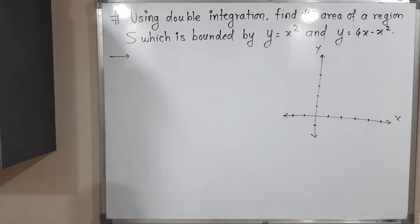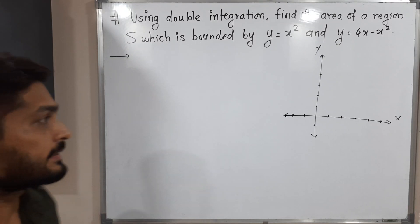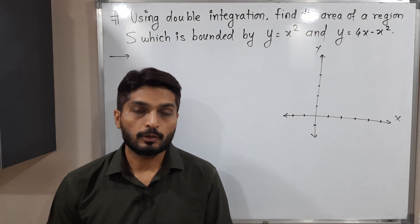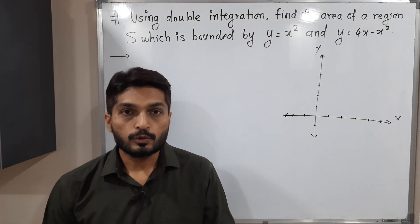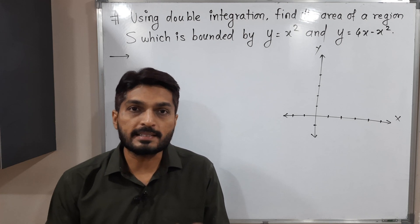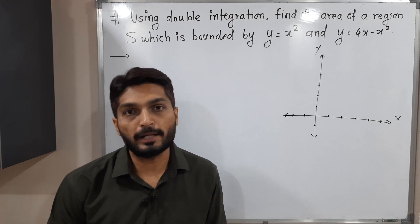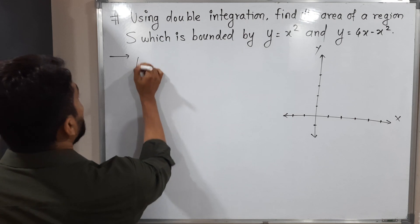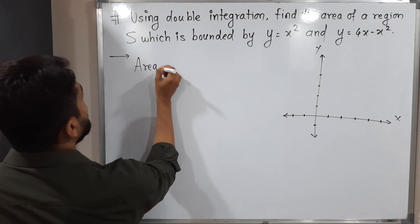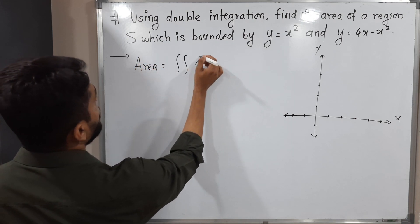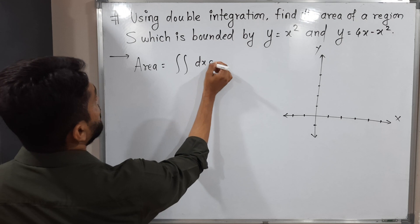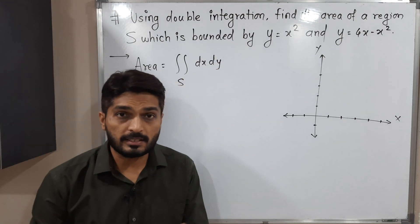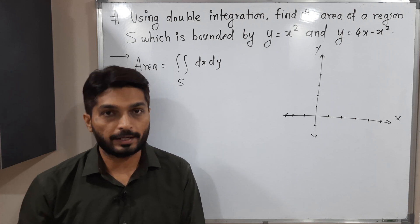Hi everyone. In this video we are going to discuss this example where we have to find area using double integration. There is a very simple formula: area is equal to double integration of dx dy over region S, where S means the given region whose area we have to find.